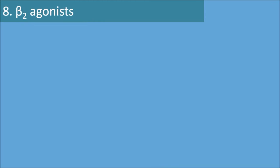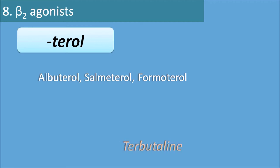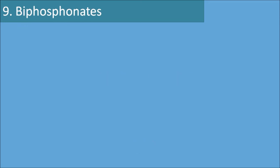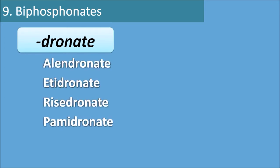The eighth category is beta-2 agonists, which have the suffix 'terol'. Examples include albuterol, salmeterol, and formoterol. One exception is terbutaline, which has a different suffix. The ninth category is bisphosphonates, with the suffix 'dronate'. Examples include alendronate, etidronate, risedronate, and pamidronate. One exception is zoledronic acid, which has a different suffix.